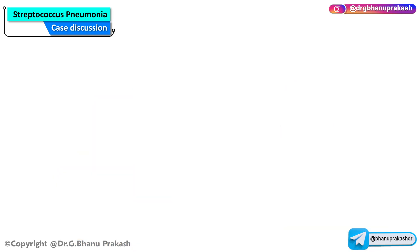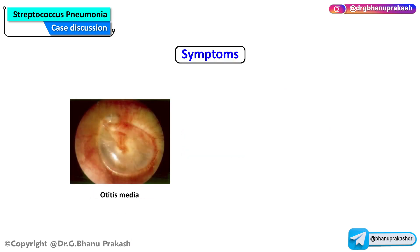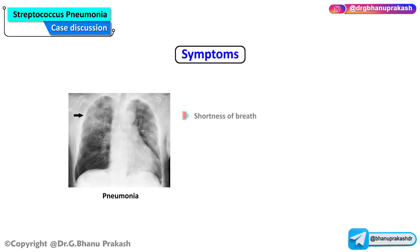Doctor, tell me if there are any symptoms that are seen in the patient with Streptococcus pneumoniae. There are few symptoms associated with this condition. Coming to the meningitis, there will be headache and neck stiffness. Coming to the otitis media, inner ear pain, and coming to the pneumonia, shortness of breath, productive cough, as well as pleuritic chest pain.